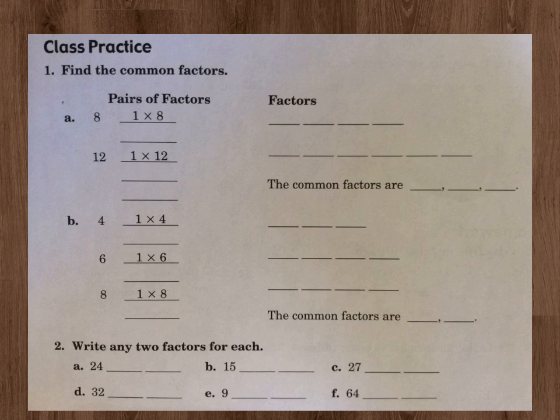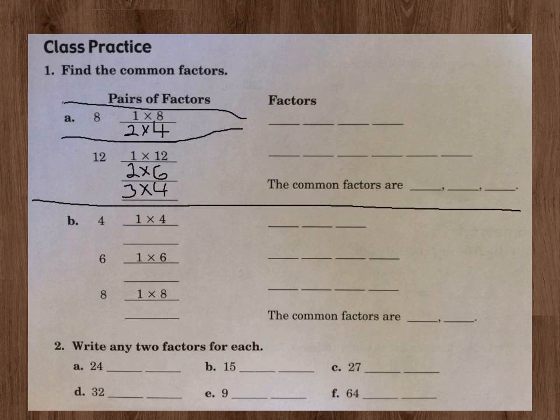Let's go ahead and look at number 1A. We've got to find the common factors. For 8, the pairs of factors is 1 times 8, and then also 2 times 4. For 12, the pairs of factors would be 1 times 12. It would also be, because it's even, you know 2 goes into it, 2 times 6, and 3 times 4. Now we're going to take the ones up there and put them here. We have 1 right there, 2 from right there, 4 from right there, and 8 from right there.